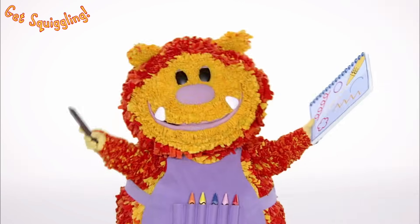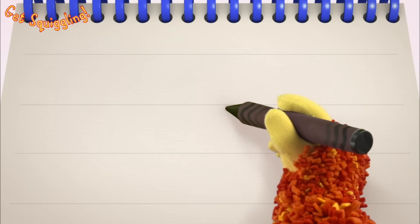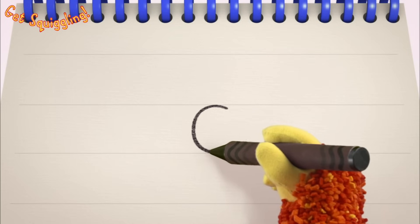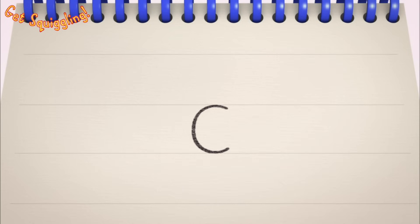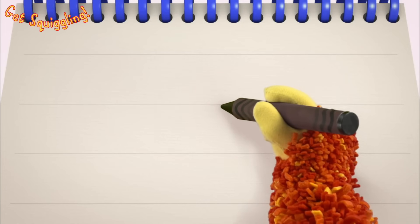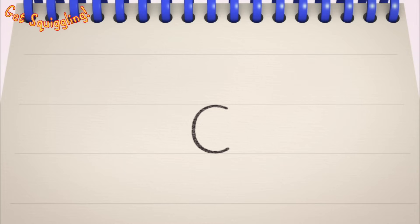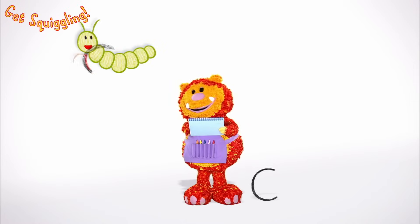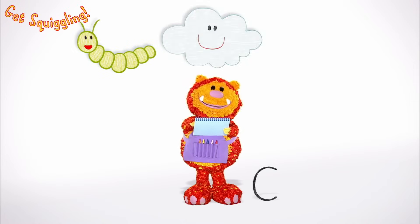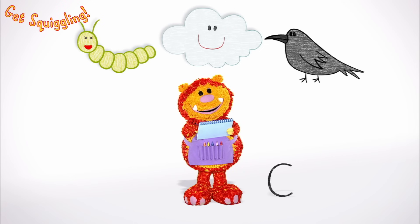Have you got your squiggle pads and squiggle sticks ready? Let's get squiggling! Holding your squiggle stick like this, move it round — the letter C! Let's squiggle it again: go round — the letter C! Shall we squiggle some things that start with the letter C? A caterpillar, a cloud and a crow — they all begin with the letter C!